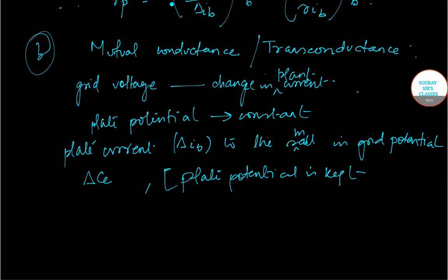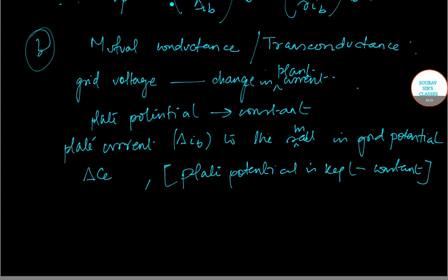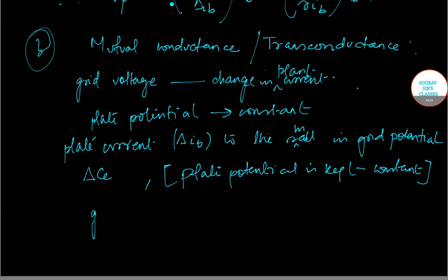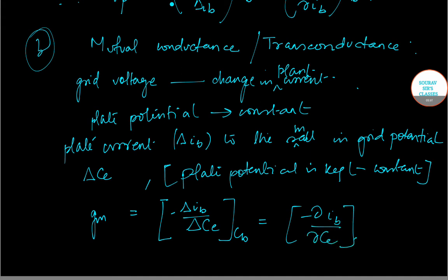So the formula becomes GM equals minus delta IB by delta EC. This is equal to minus del IB by del EC.